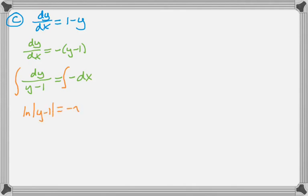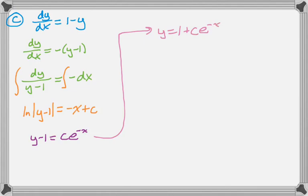I get natural log of the absolute value of (y - 1) equals negative x plus c. Don't forget the plus c. I always put it with the independent variable. Whenever I have the natural log, I like to exponentiate before solving for c, because that allows me to not worry about those absolute values, which is really nice because you can get kind of bogged down in that.